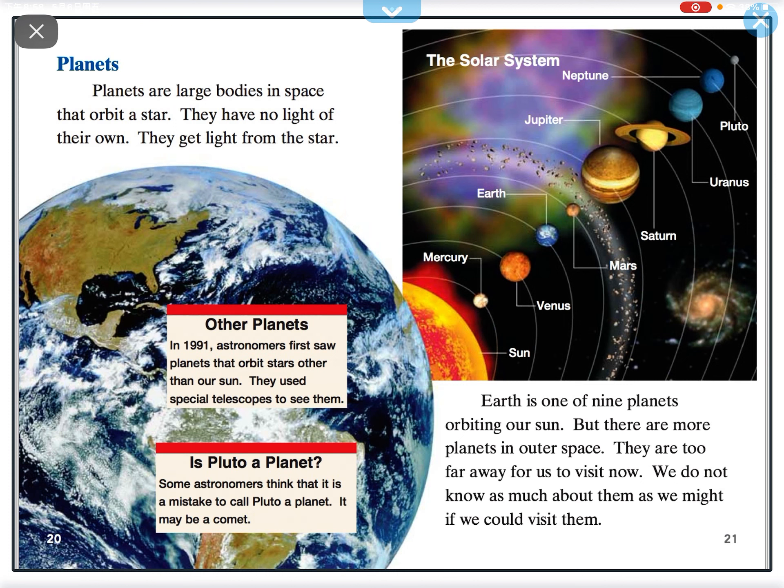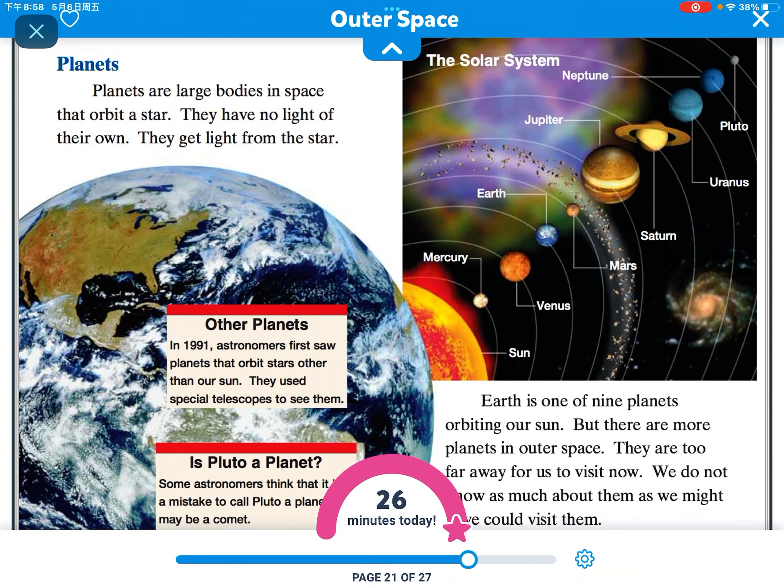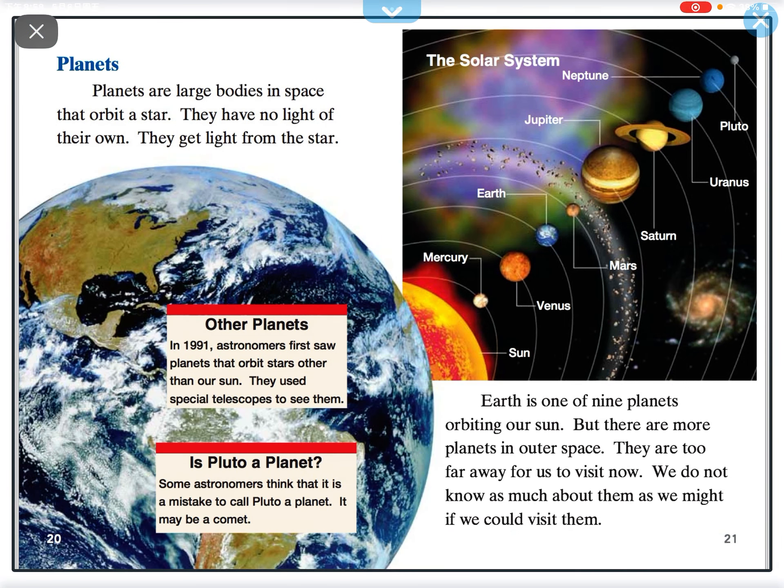Planets are large bodies in space that orbit a star. They have no light of their own. They get light from the star. Earth is one of nine planets orbiting our sun. But there are more planets in outer space. They are too far away for us to visit now. We do not know as much as we might if we could visit them.